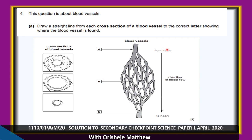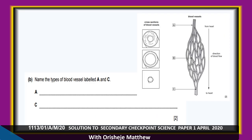From the heart, blood travels away via the artery — vessel A is an artery. Blood returns to the heart via the vein — vessel C is a vein. The blood vessel connecting artery to vein is the capillary, vessel B. The largest artery is the aorta; the largest vein carrying blood to the heart is the vena cava.